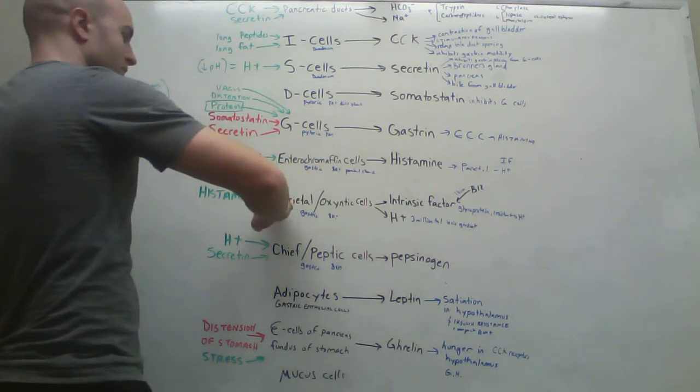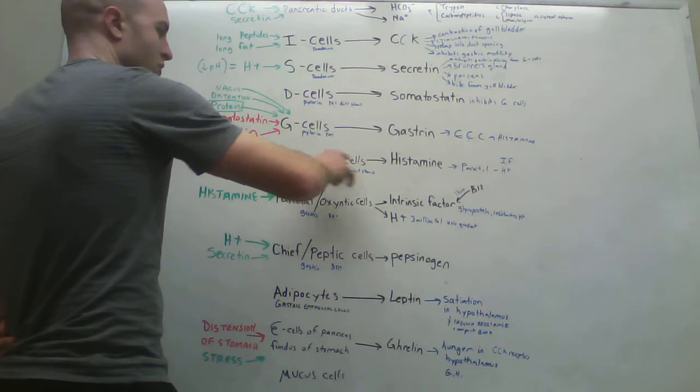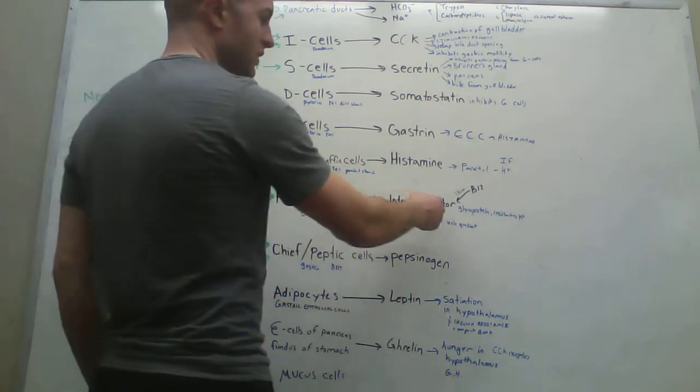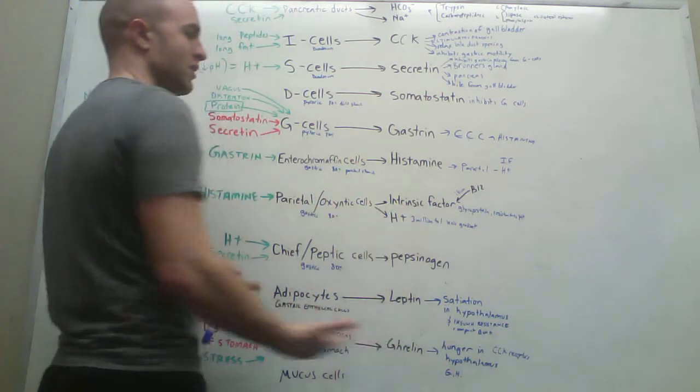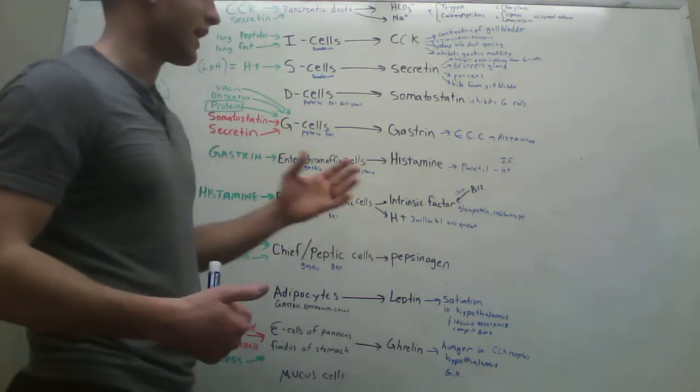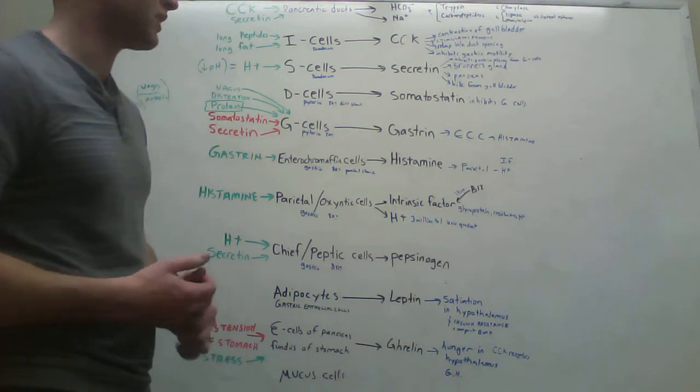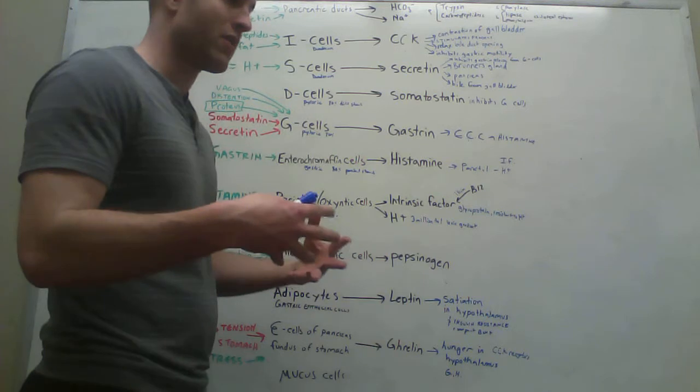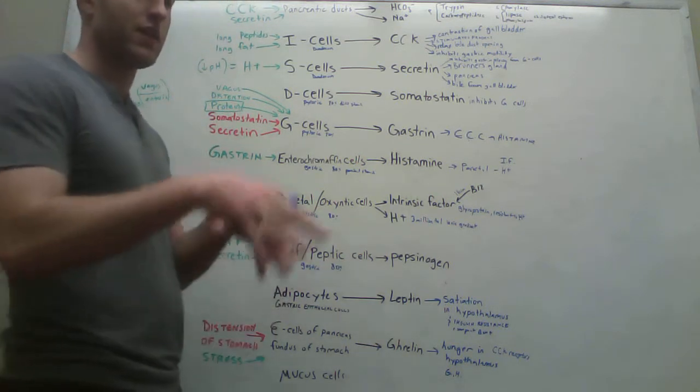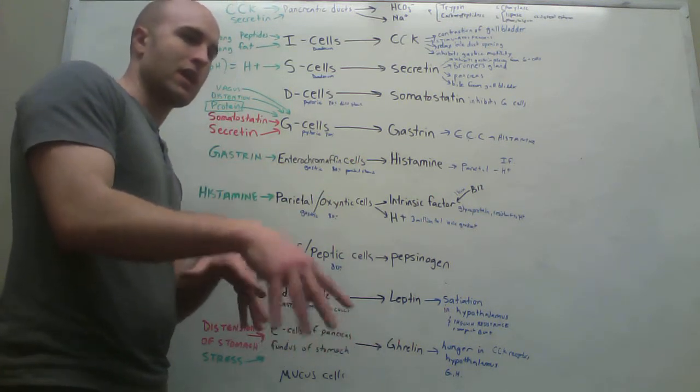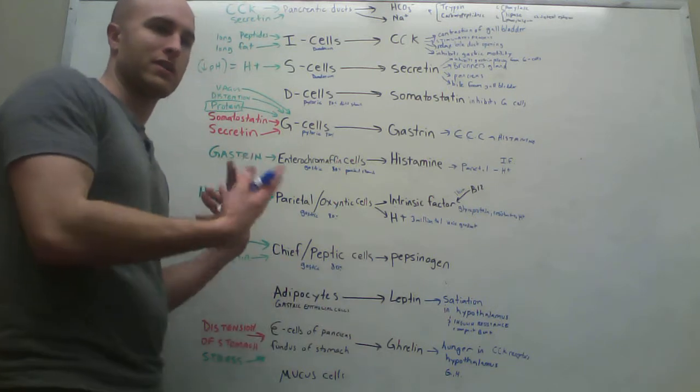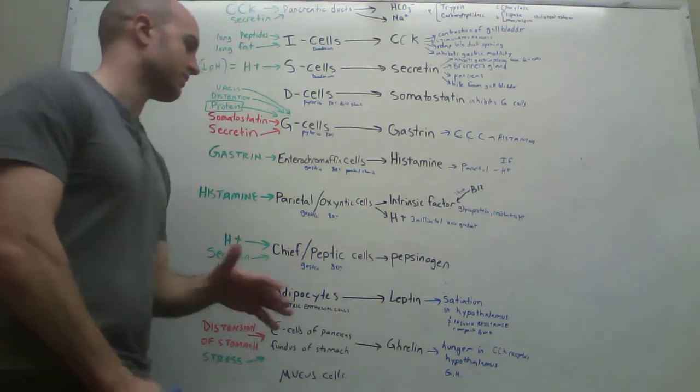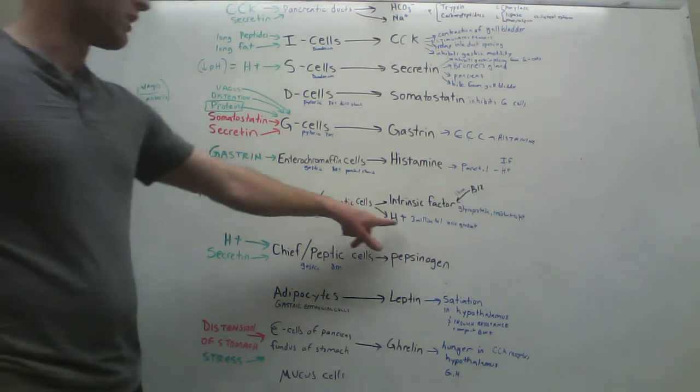So parietal cells are going to, so enterochromaffin is histamine. Histamine now stimulates the parietal oxyntic cells to release two things, intrinsic factor and H+. So what is intrinsic factor? It's this glycoprotein that's resistant to hydrogen. Intrinsic factor goes down in the stomach and eventually somehow it interacts with B12 and then it like settles in the ileum and then apparently goes back and the B12 is stored in our liver. So it has something to do with getting B12.